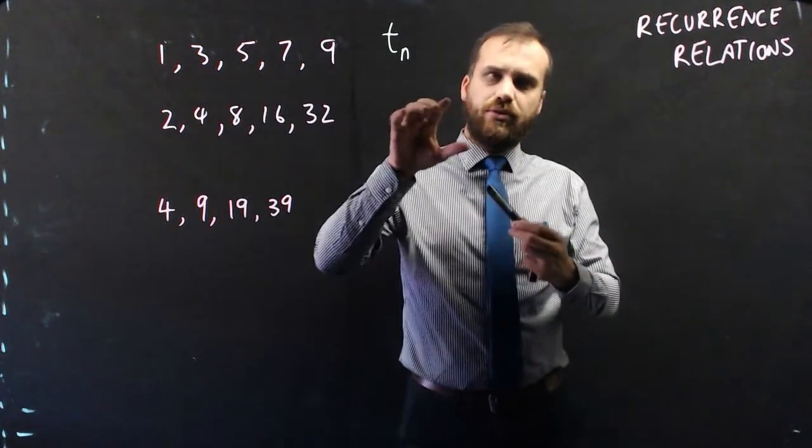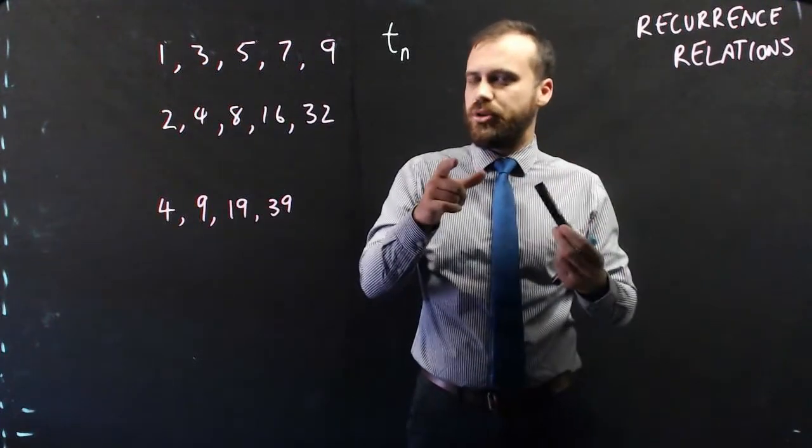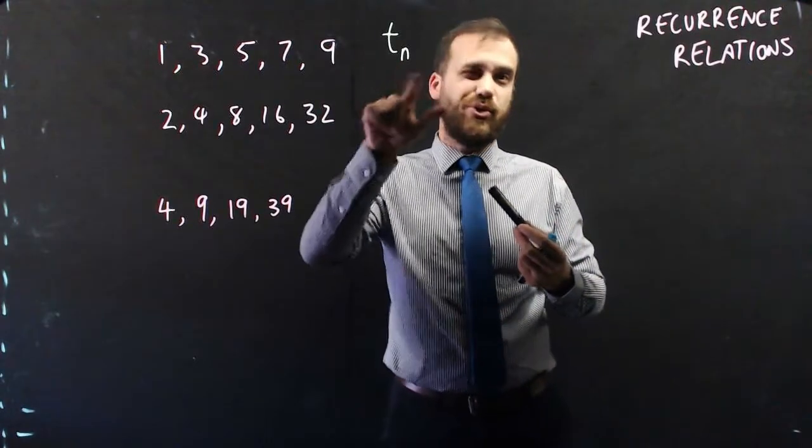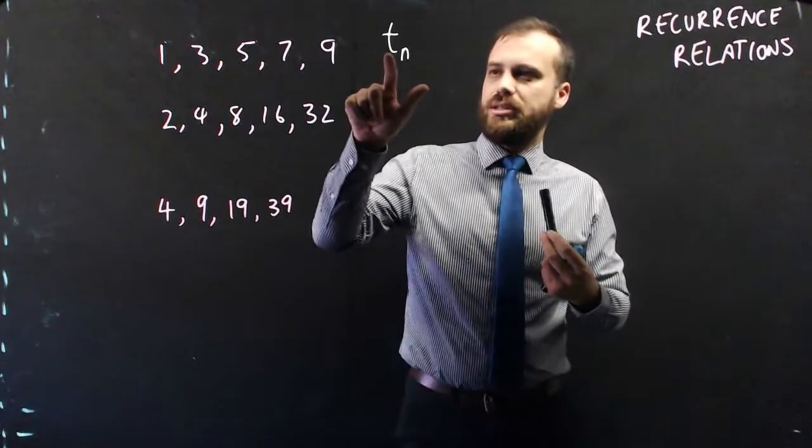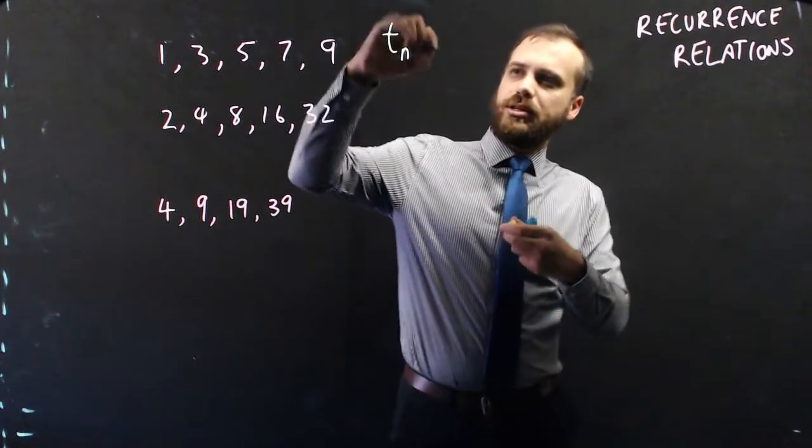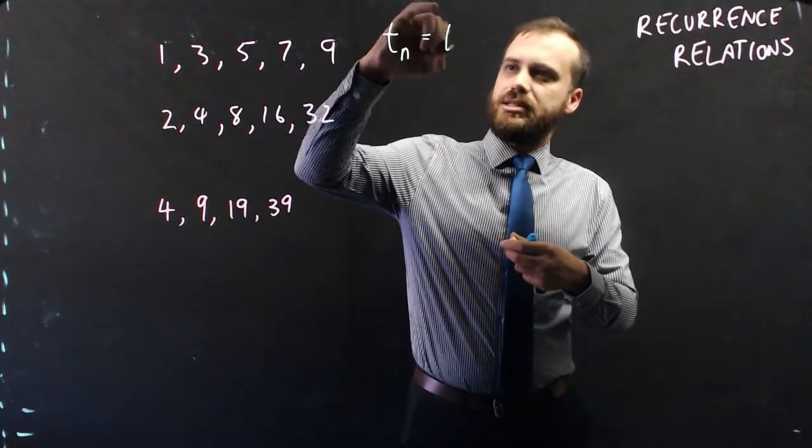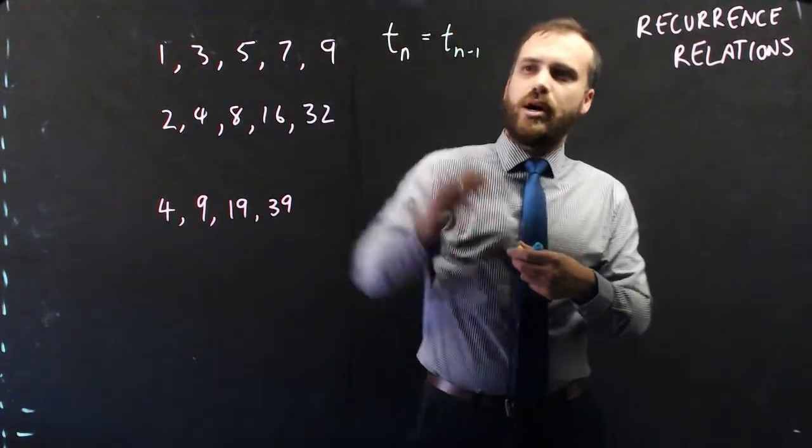Now, recurrence relations only work if you know the term that came just before that one. So tn, the formula, the term that comes just before tn is tn-1.